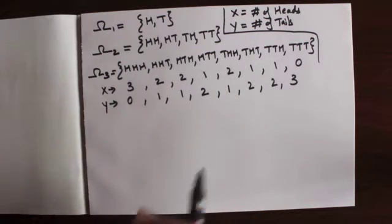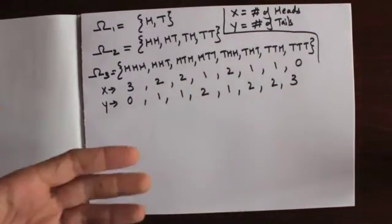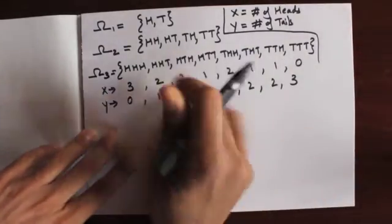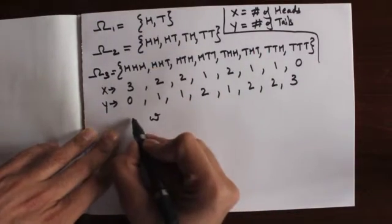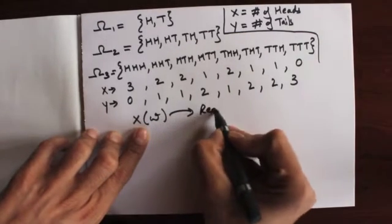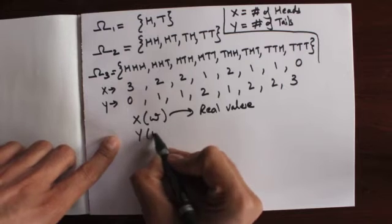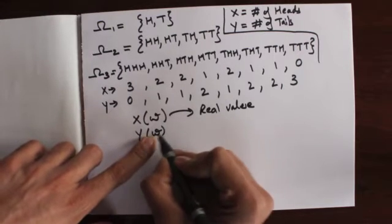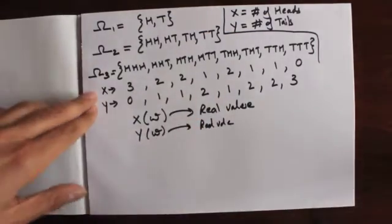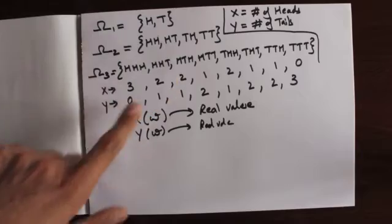A random variable is a real-valued function that takes an outcome of our sample space and assigns it a real value. Denoting an outcome as omega, X is a random variable that takes omega and gives it a real value. Similarly, Y is another random variable defined on the same sample space — even though the experiment is the same, the two random variables assign different real values to each outcome.